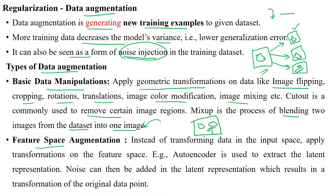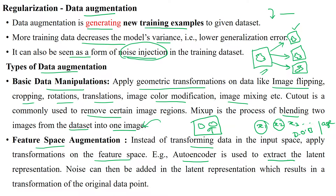We can also apply feature space augmentation — instead of transforming images in the input space, we apply transformations on the features X1, X2, X3. There is the possibility of increasing more features. For example, if you have a date of birth feature, we can derive one more feature: age. We can increase the number of features in the dataset using auto encoders, which extract the latent representation — that is, unknown variables. Age is unknown, but from the date of birth we can derive the age value, which is called the latent variable.